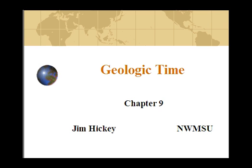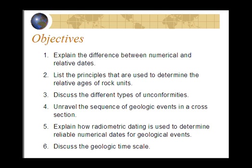So what are you going to be getting from this material? The objectives: to explain the differences between numerical and relative dates — in other words, absolute dating and relative dating principles. We'll look at the principles involved in determining the relative ages or relative relationships between rock units. We'll also discuss the different types of one of those principles, specifically something called unconformities.